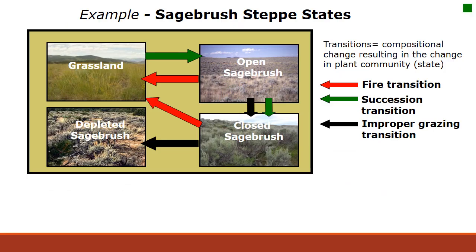Here's another visualization of that sagebrush steppe stable state with different transition factors. Fire transitions an area from shrubs back into grassland. Successional transitions — essentially just time — allow sagebrush to come back into grasslands. You can also have management dynamics within the stable state; for example, improper grazing in an open sagebrush community leads to loss of perennial grasses and an increase in sagebrush. This framework lets us see transitions and understand where we might need to make adjustments to keep the system in the stable state.